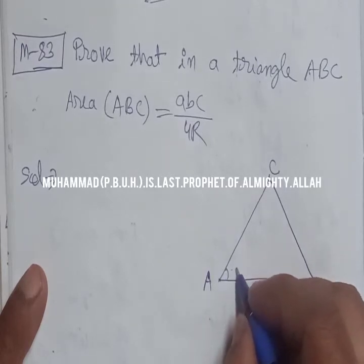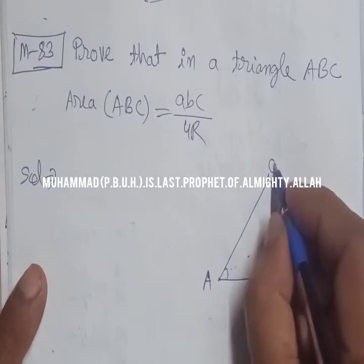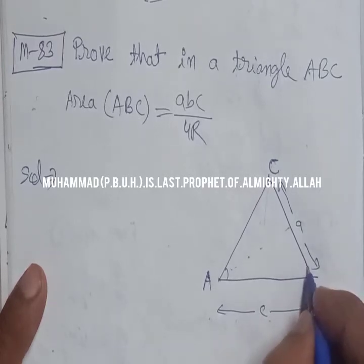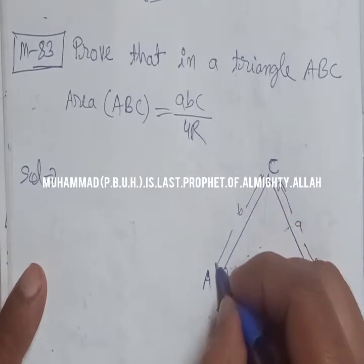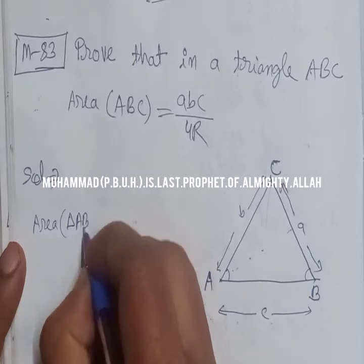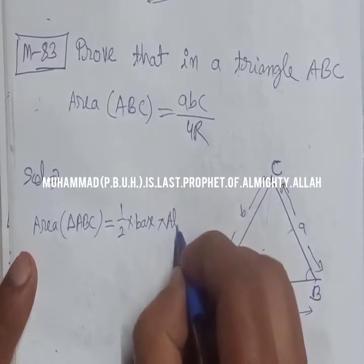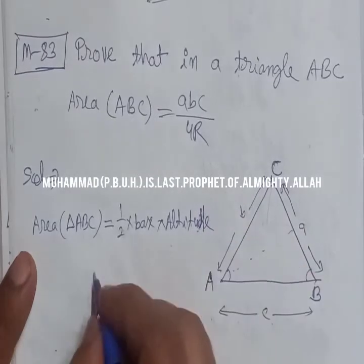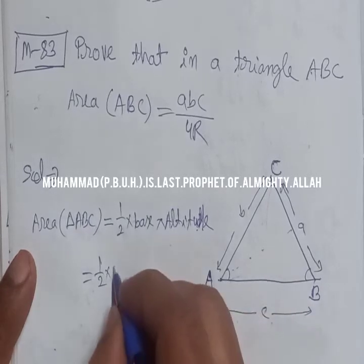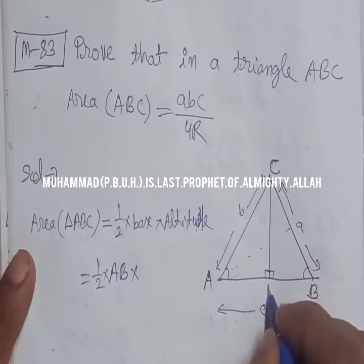We know that for angle A, the opposite side is denoted by small a. For angle C, its opposite side is small c, and for angle B, the opposite side is small b. If we want the area of triangle ABC, it is equal to one-half times base times altitude. You can take any base. I take AB as the base, so the perpendicular from C to AB is its altitude.